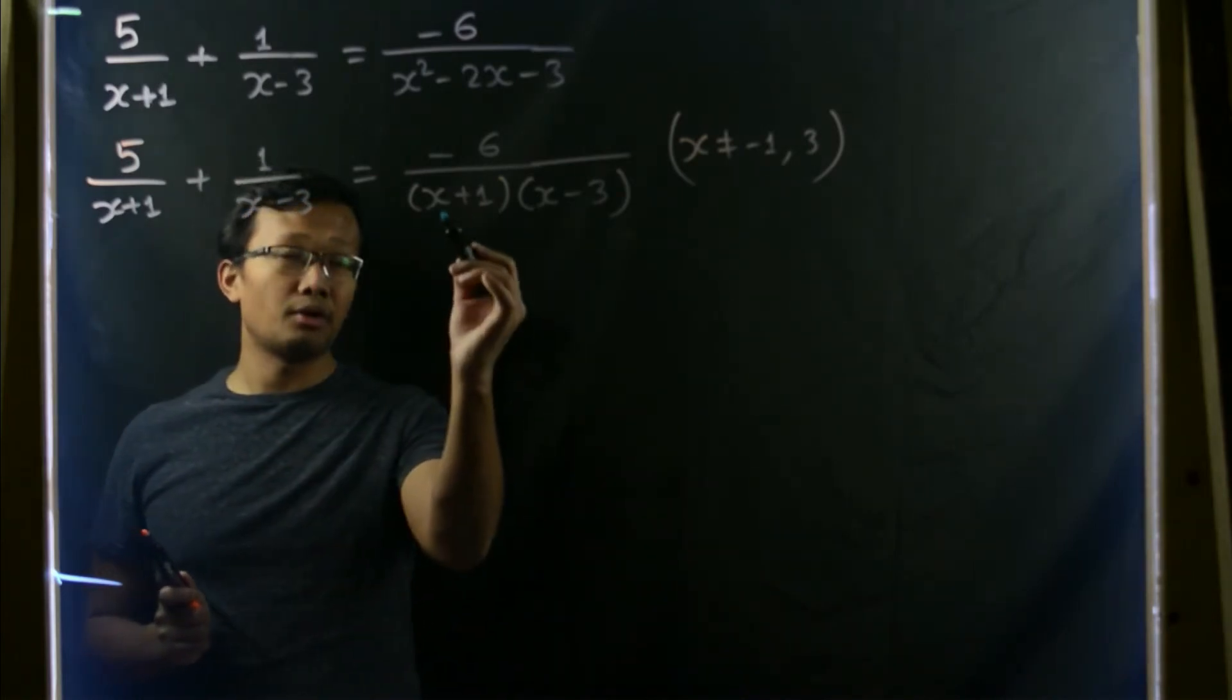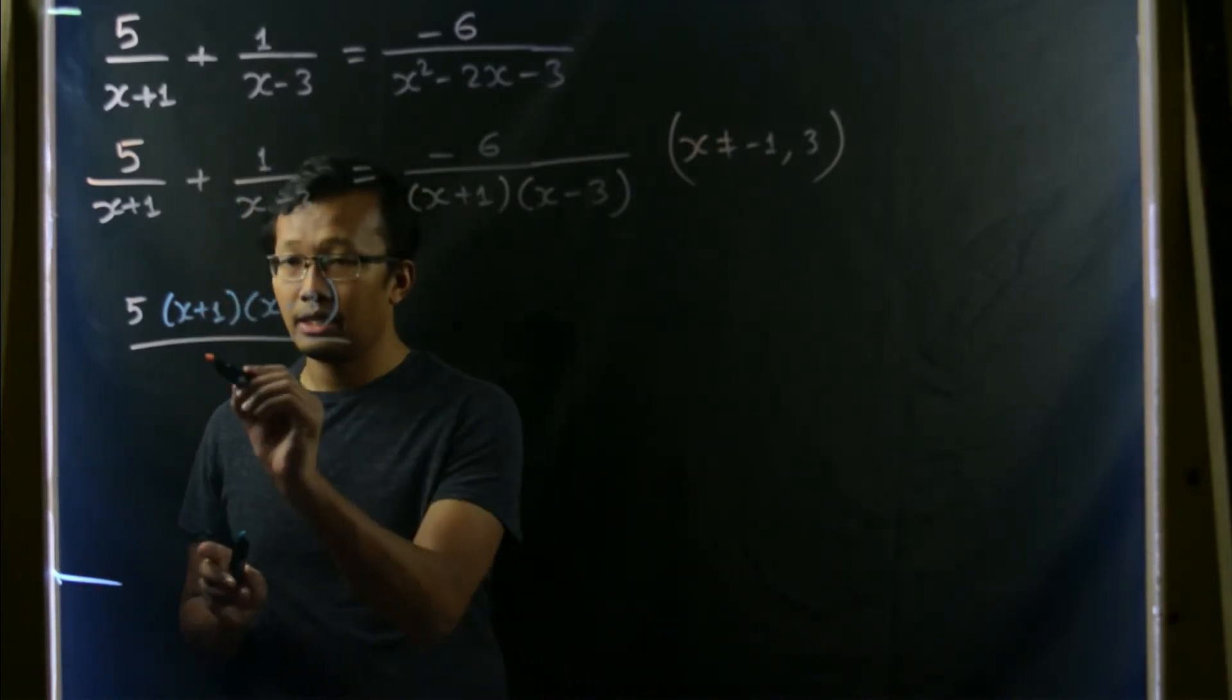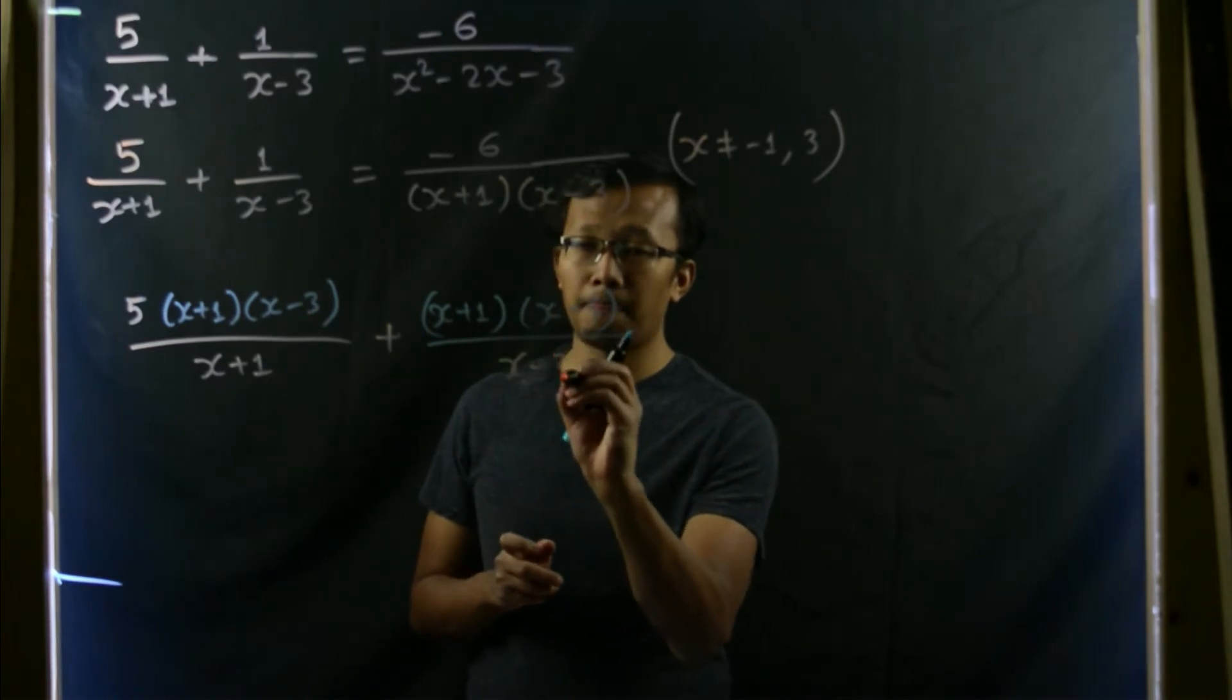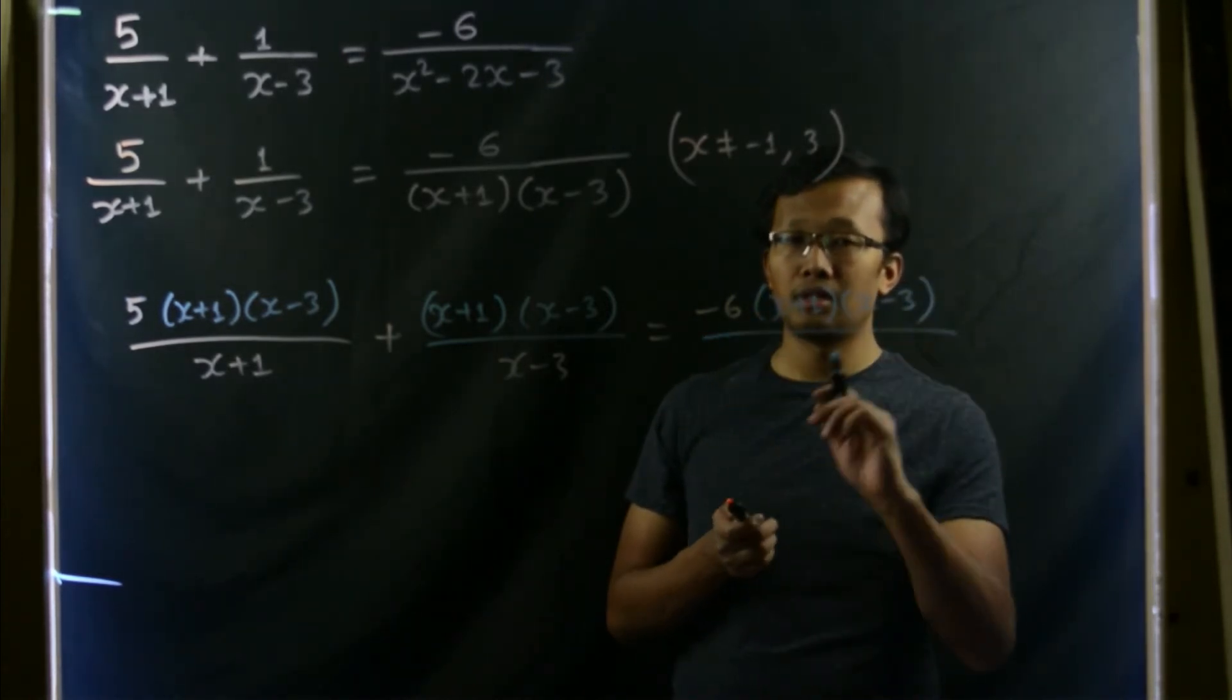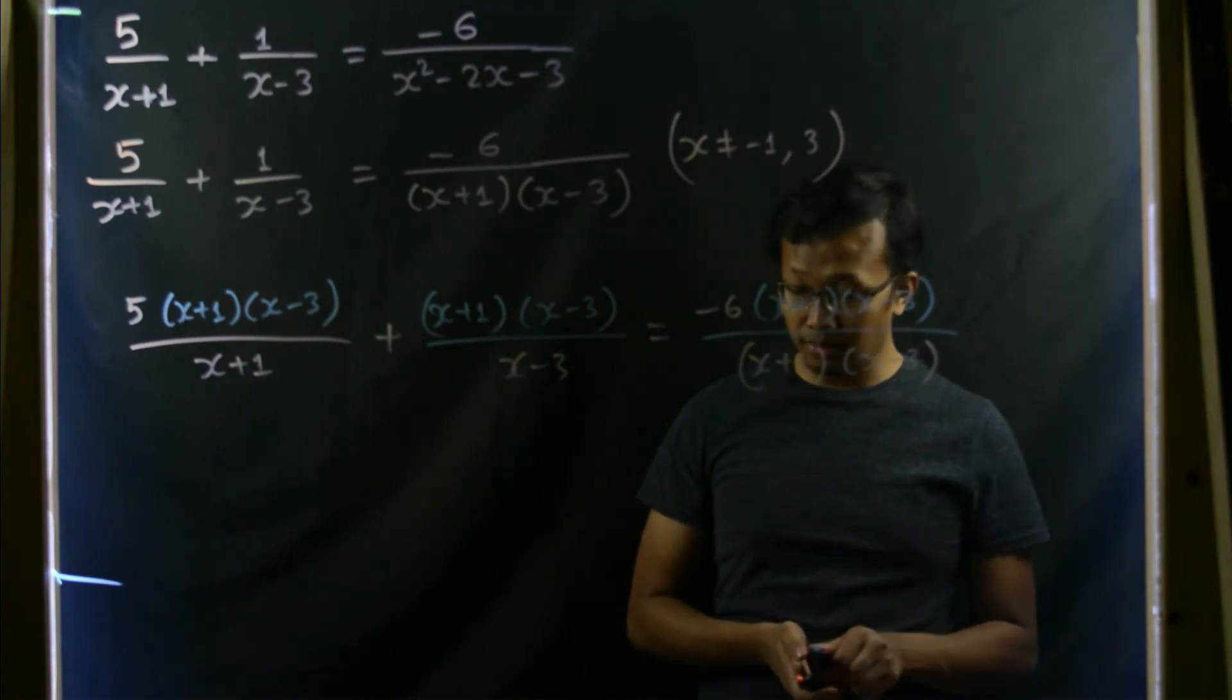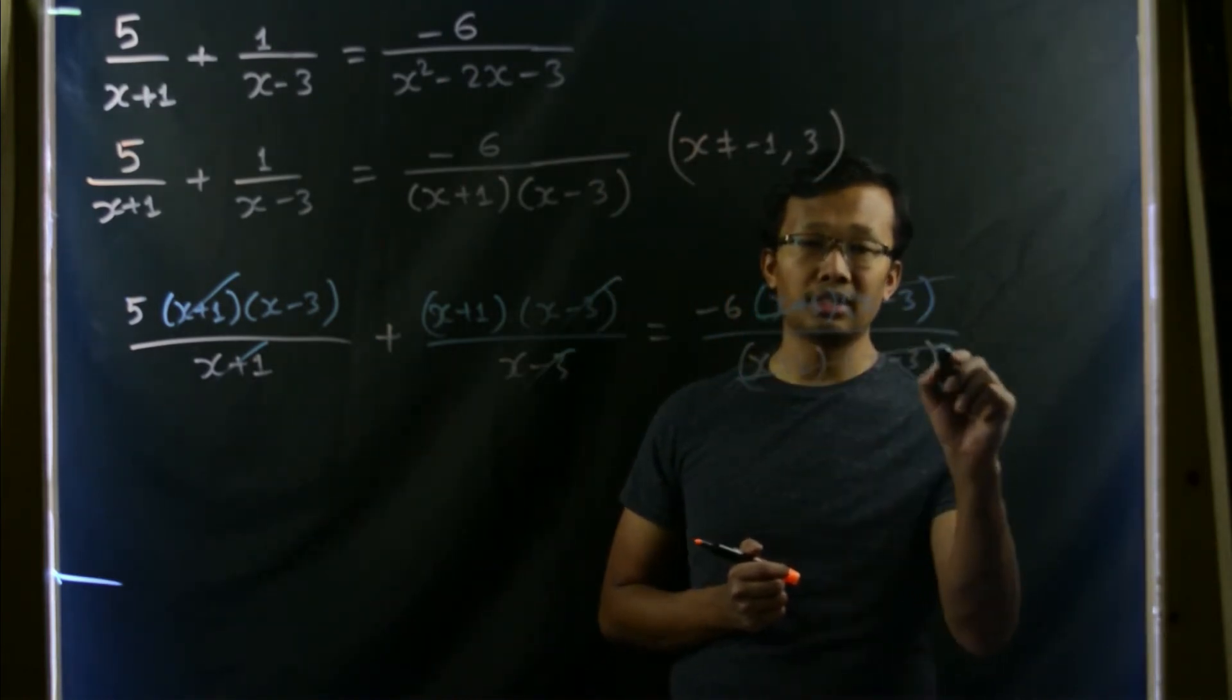So if we multiply by product of (x+1) times (x-3), then it will become 5 times (x+1)(x-3) divided by (x-3) divided by (x+1), plus 1 times (x+1)(x-3) divided by (x-3), equals -6 times (x+1)(x-3) divided by (x+1)(x-3). Now after multiplying the entire equation, you can see what cancels out. In the first case, x+1 is cancelled out. In the second expression, x-3 is cancelled out. In the third expression, everything cancels out except -6.